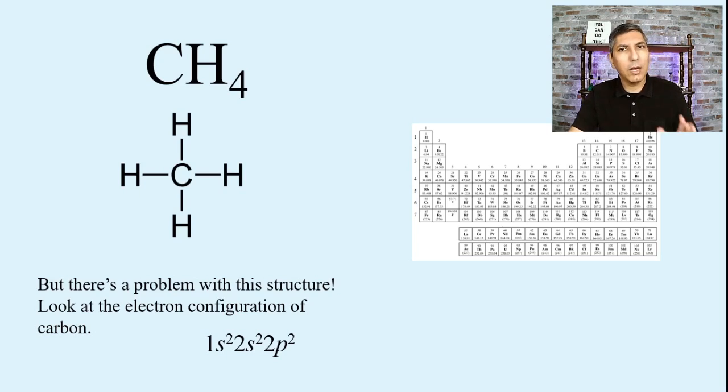And the only electrons that we care about for bonding, like we said, are the valence electrons. So we can, for all practical purposes, ignore the 1s2. And let's plot where the four electrons are that are valence electrons. So 2s2 would be like this. We have 2s2, those two electrons. And then the 2p2, according to Hund's rule, the first electron would go into this orbital. And the second electron goes into that orbital right there.